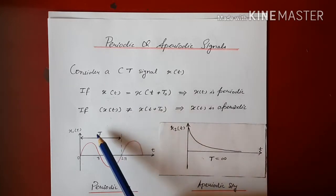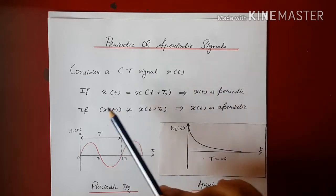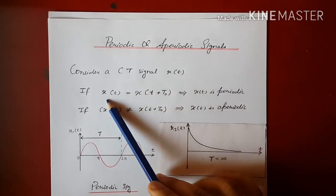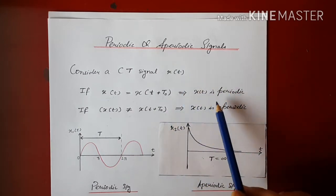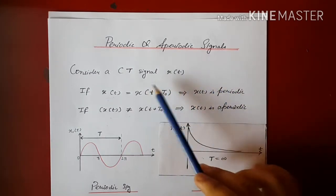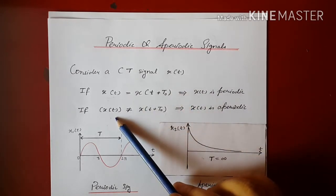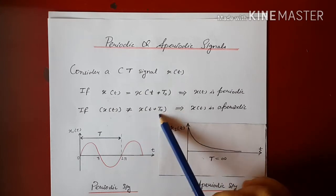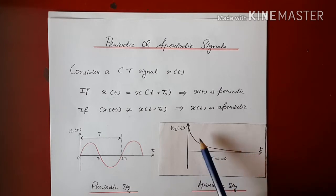That time period is called the fundamental period of the signal, and that signal is a periodic signal, which is represented mathematically as x(t) = x(t + T₀), where T₀ is the fundamental period. If the signal is aperiodic, then mathematically it is represented as x(t) ≠ x(t + T₀), as can be seen in this signal where there is no repetition ever in the time direction.